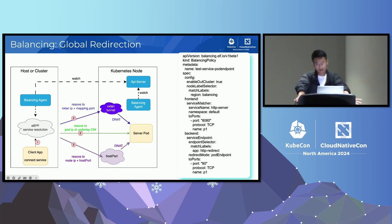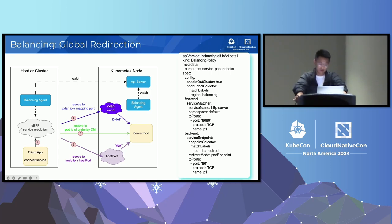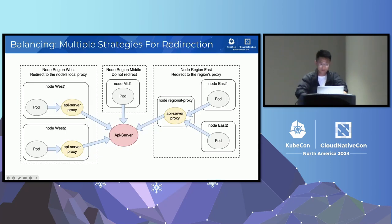Traditional solutions like NodePort or LoadBalancer introduce forwarding nodes, which can cause issues such as exhausting source ports via SNAT, forwarding performance overhead, difficulty tracing packets, and experiencing SNAT. This comparison is not to indicate that classic solutions are ineffective, but rather to highlight that client-side load balancing can avoid these issues and is suitable for simpler use cases. With global redirection, node-local redirection, and kube-proxy replacement, the transparent API server proxy can be implemented with multiple strategies as needed.